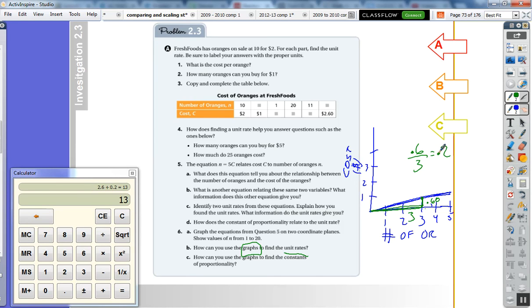How can you use the graph to find the constant of proportionality? The constant of proportionality is the unit rate, folks. So that is problem A.